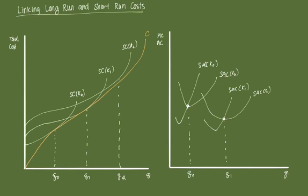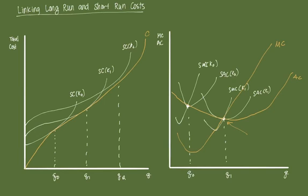To derive the long-run average cost and long-run marginal cost, we link those lowest points together. The resulting long-run average cost curve will have a minimum point, and at that minimum point the marginal cost curve crosses the average cost curve — at one point only — where marginal cost is equal to average cost.